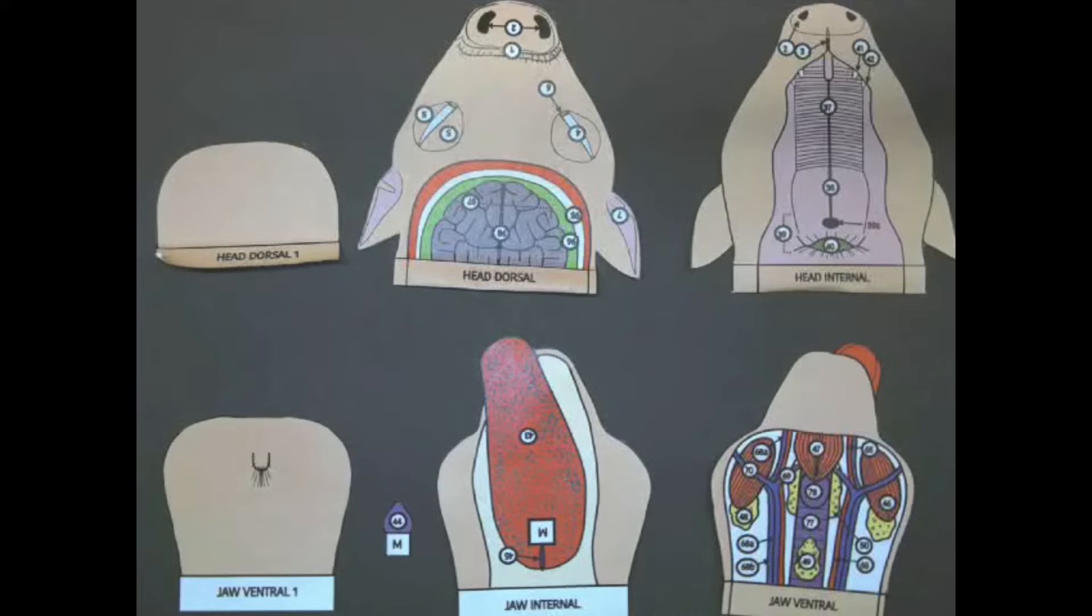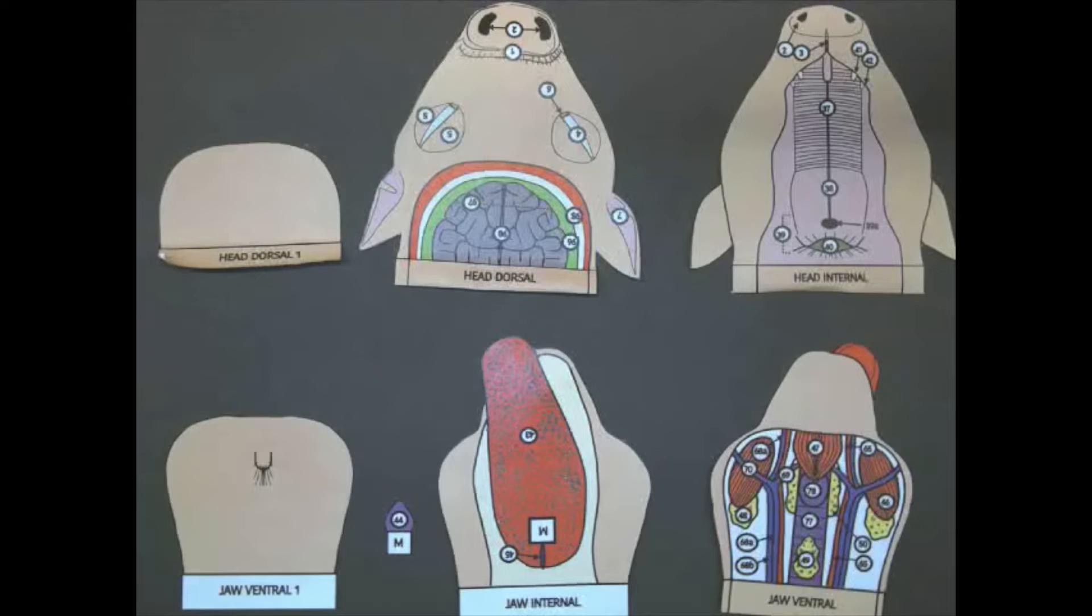You're going to want to apply some glue where it says head dorsal right underneath the brain. After that you can attach head dorsal one which is a flap of skin that will cover the brain.